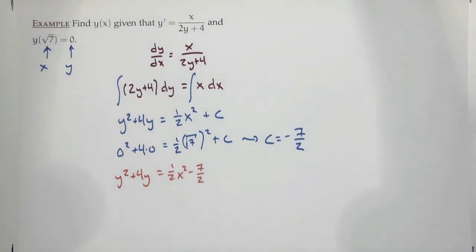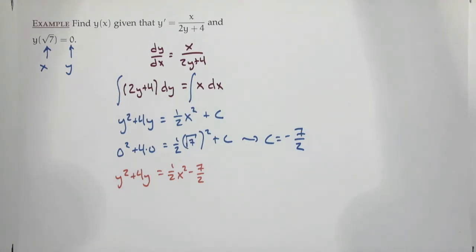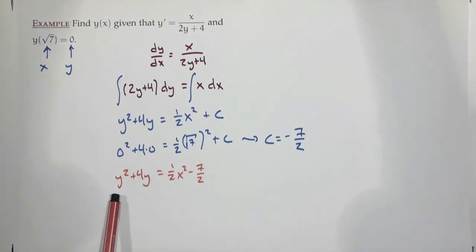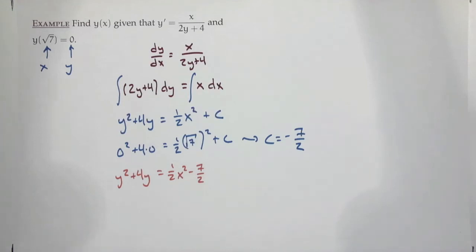Are we done? Not quite — it says find y(x), meaning we must solve explicitly for y. We can't leave an implicit solution. So how do we solve for y? Complete the square. We have y²+4y — take the middle coefficient 4, divide by 2 to get 2, then square to get 4. Add 4 to both sides.